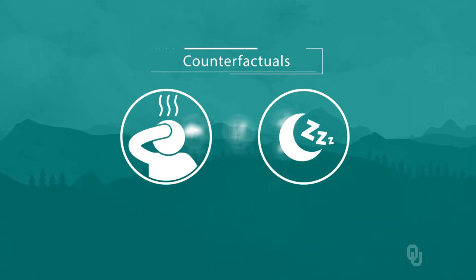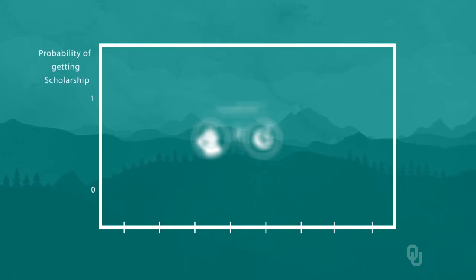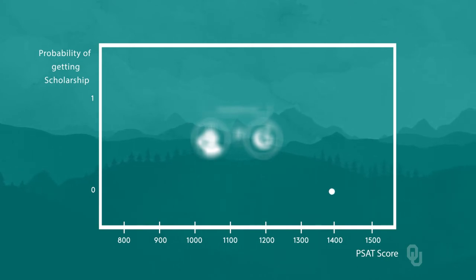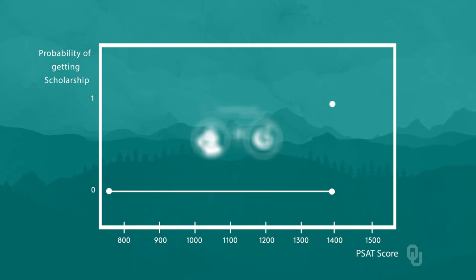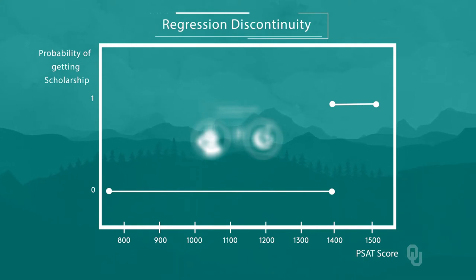Let's look at two graphs that explain the technique. First, consider a graph with the probability of getting the scholarship on the vertical axis and the PSAT score on the horizontal. In our example, for PSATs below 1400, the probability of treatment is zero, and for scores above 1400, the probability jumps to one. This is the discontinuity that we are using to identify the treatment effect of the scholarship.